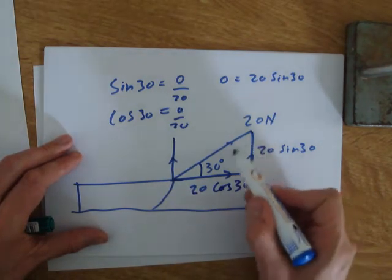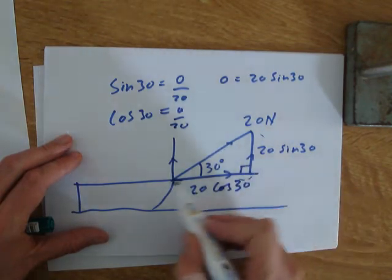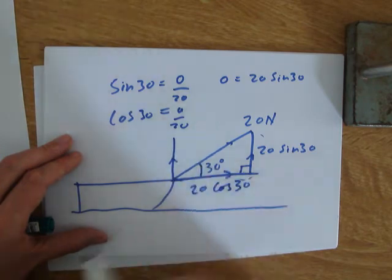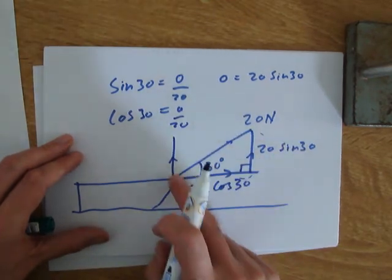The thing we have to watch for is that this force, although we've calculated it in this position because it makes us a nice right angle triangle, it's actually acting here. It's not lifting the sledge right out from here; it's acting up from over here.